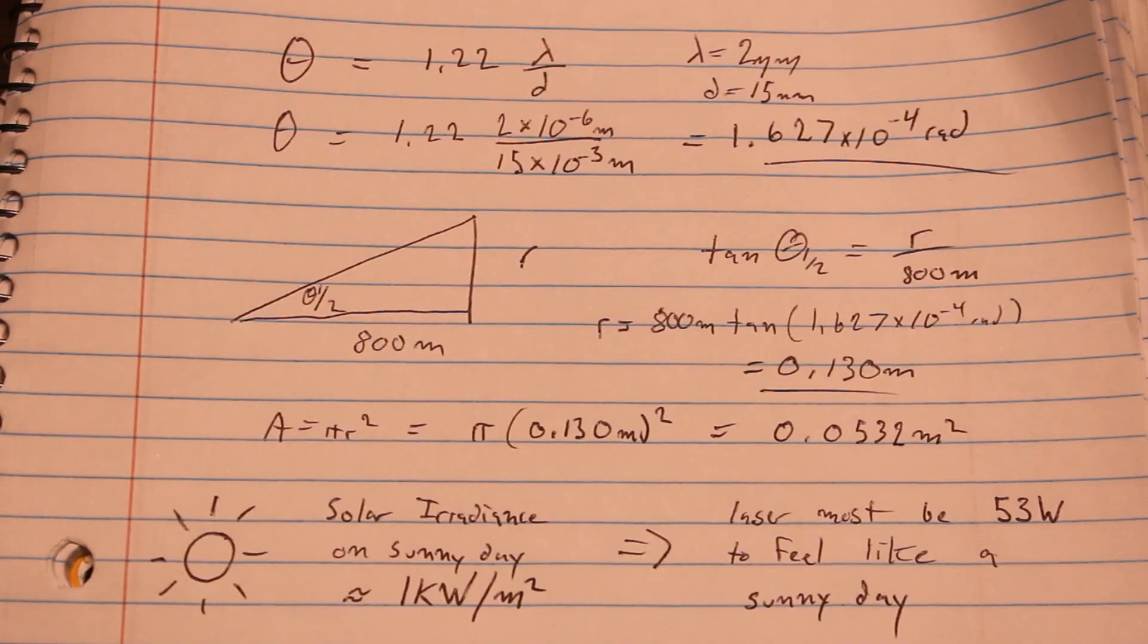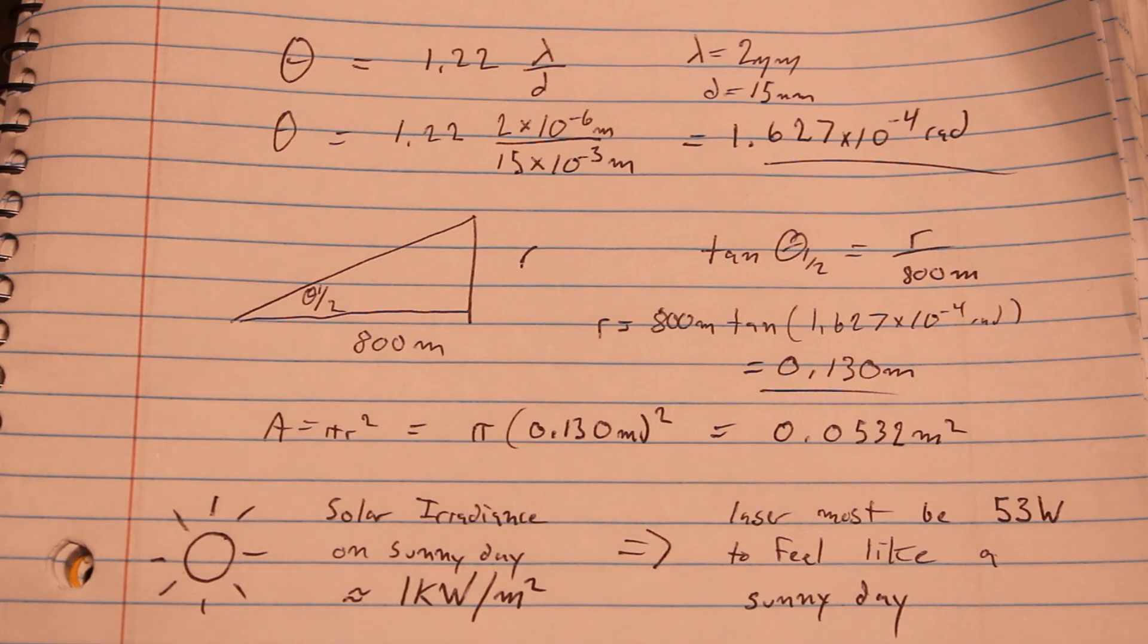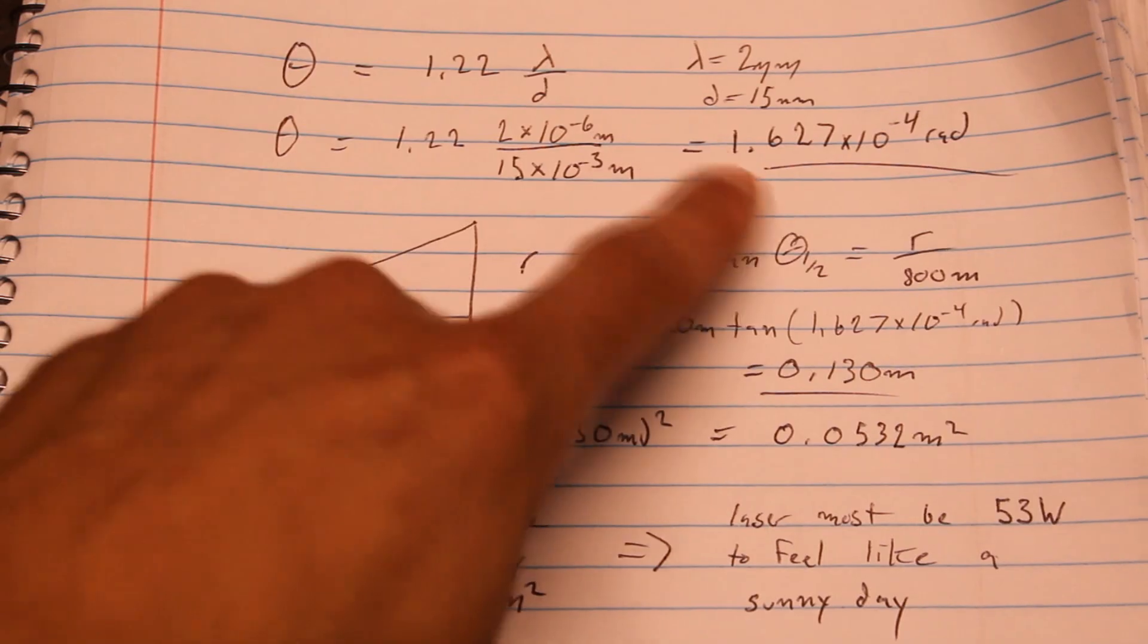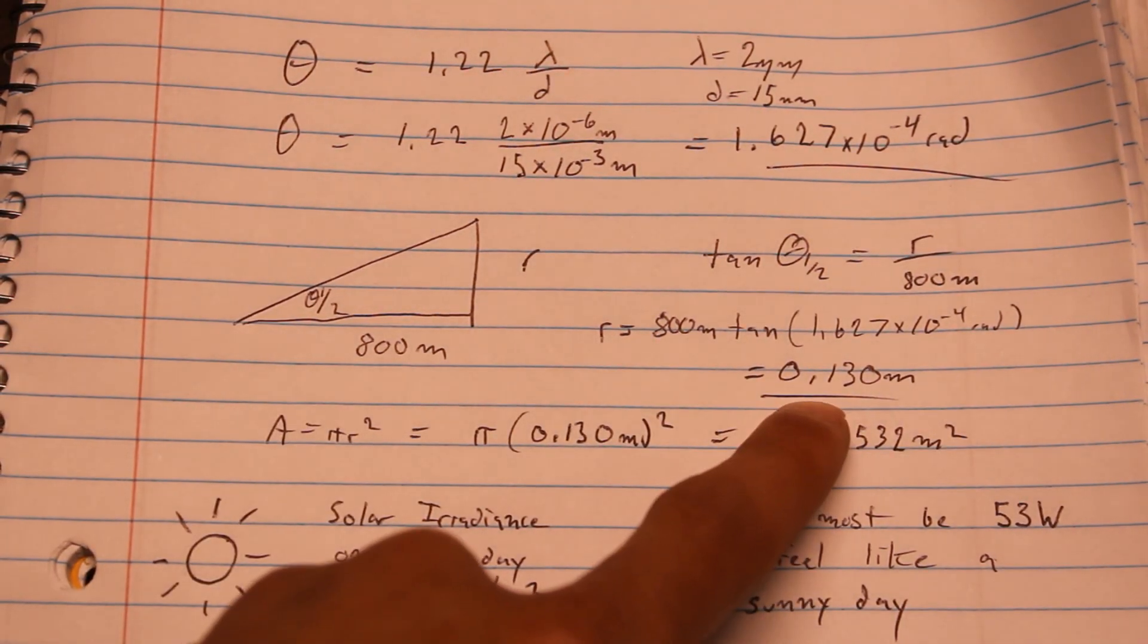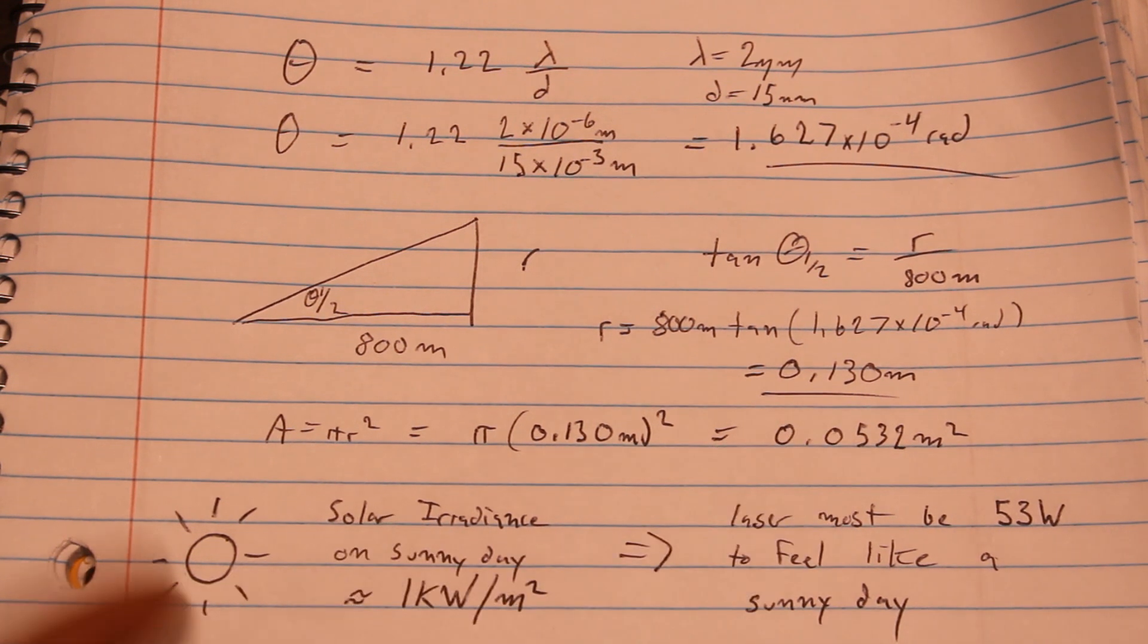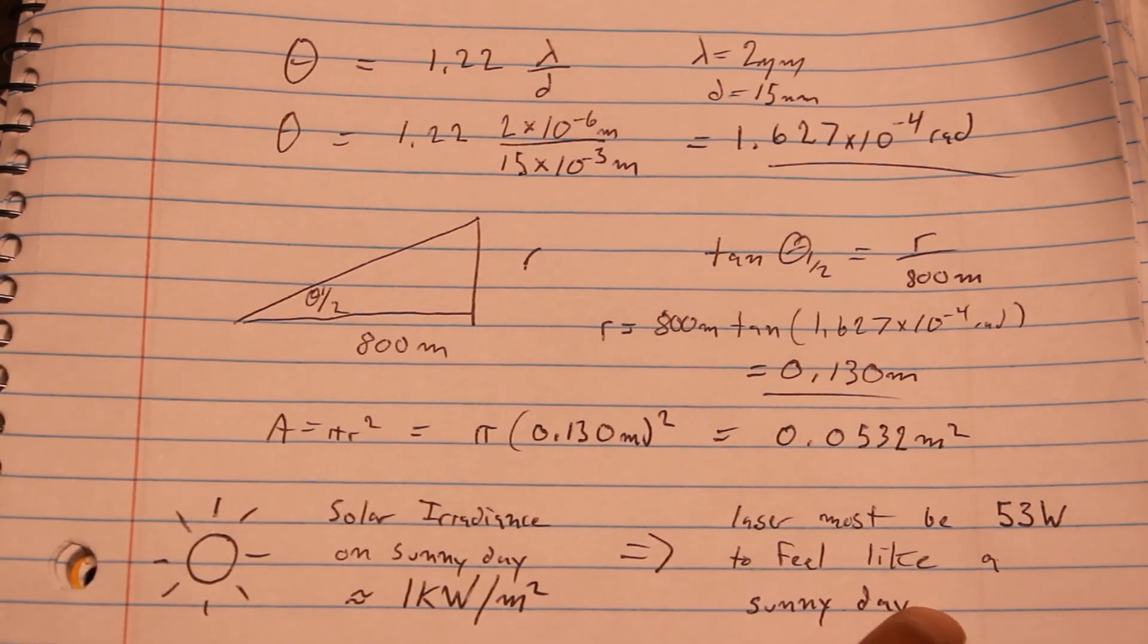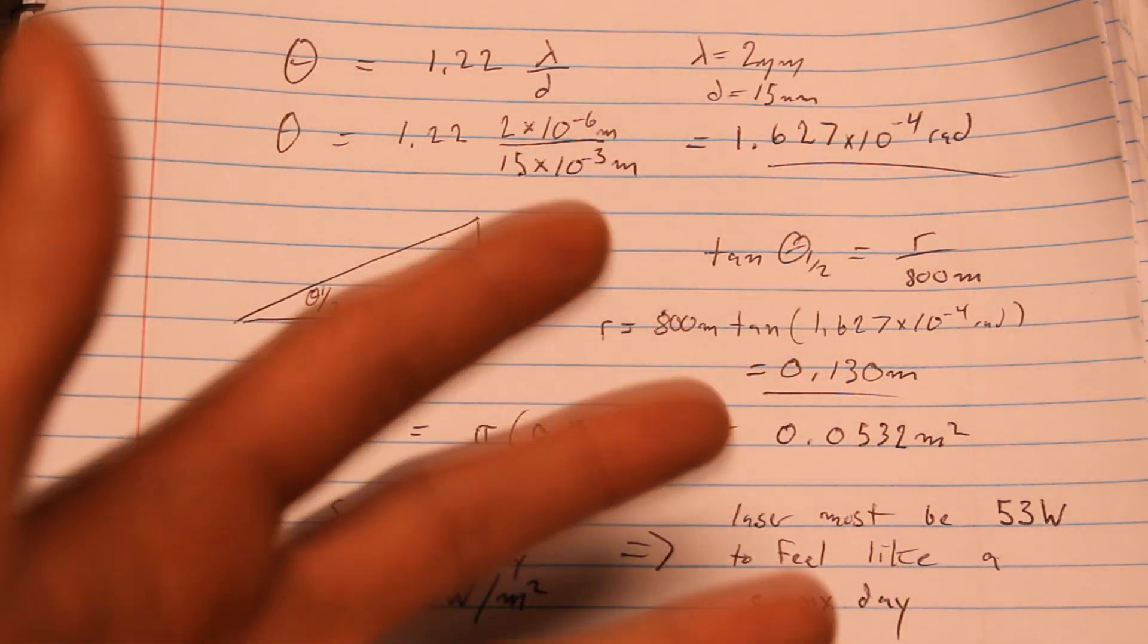So if we assume that this laser gun has nearly perfect optics and achieves a diffraction-limited beam, then I can use the Raleigh criterion to calculate the best case scenario of what that beam is going to look like 800 meters away. So by plugging these values into the Raleigh criterion, I get an angle here. And then I can use right-angle trig to calculate the beam size at that distance. And I get a beam radius of about 13 centimeters. Now for this laser just to feel like the sun on a sunny day, it must have a power of 53 watts, which is a lot of power, but not nearly enough to burn anything out at this distance.